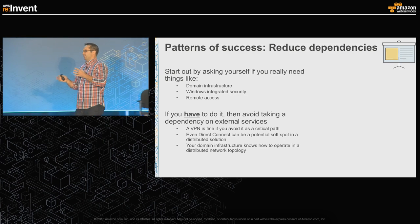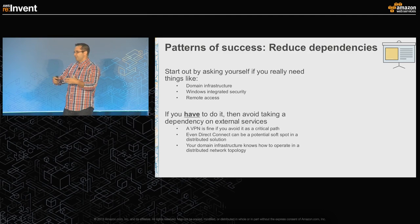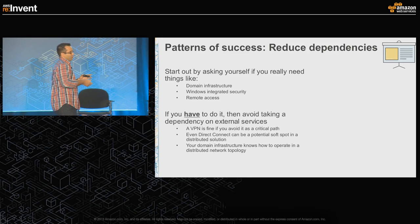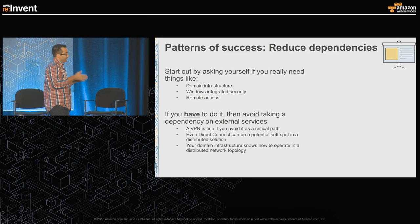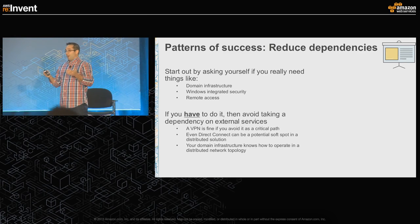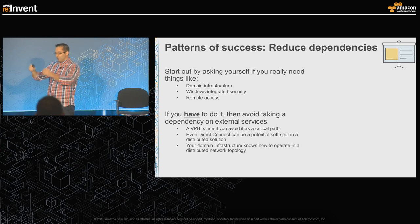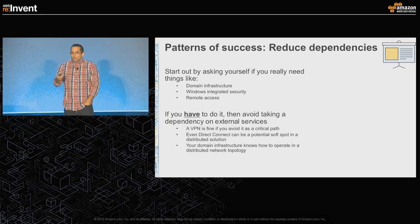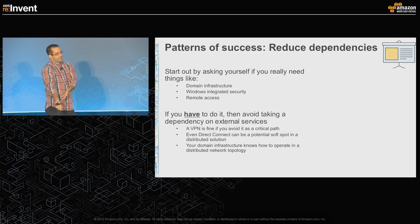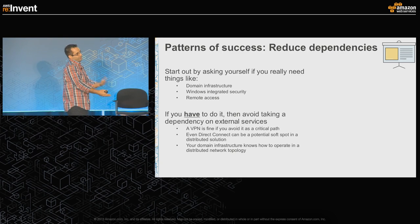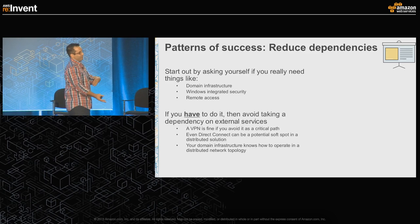It doesn't mean you have to reduce dependencies completely — maybe you reduce them from certain tiers, or maybe there are places you just can't. If you have to keep them, think about scenarios like running a domain controller within AWS. Our most downloaded white paper is running and installing Active Directory in AWS. My theory is you want to run in a manner isolated from things you'd otherwise be dependent upon — like a VPN or Direct Connect line. Those things could go down, creating connectivity problems, solution failures, and unhappy users.